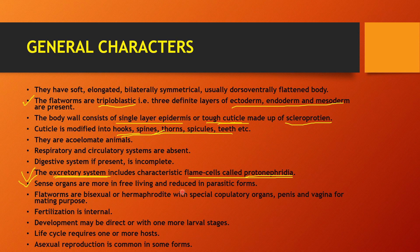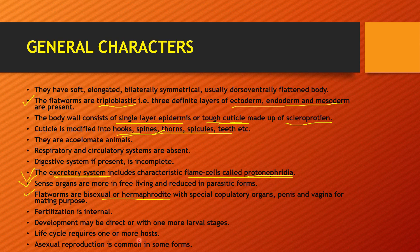Sense organs are more developed in free-living forms and reduced in parasitic forms. They are bisexual, which we call hermaphrodite — meaning both male and female reproductive organs are present in one individual. Fertilization is internal. Development can be direct or indirect, with larval stages. Life cycle requires one or more hosts. Asexual reproduction is also common in some forms. These are the general characters of Phylum Platyhelminthes.